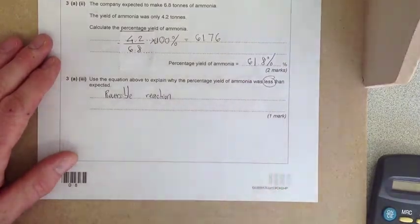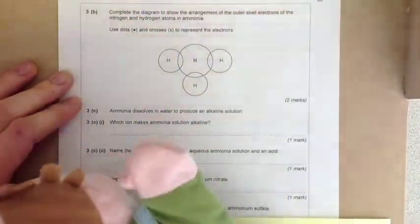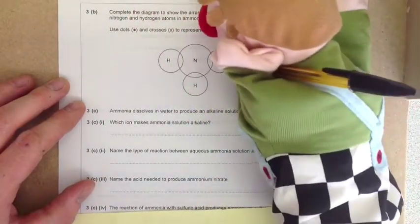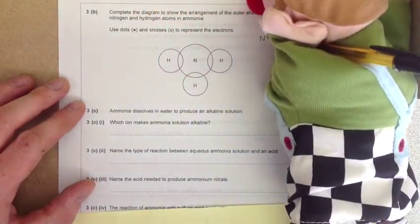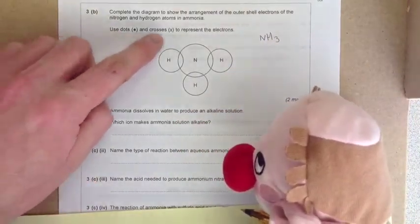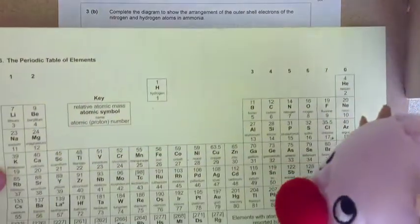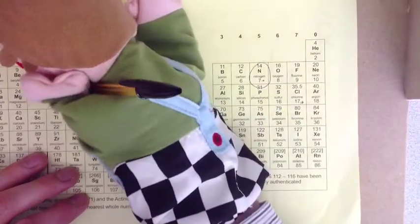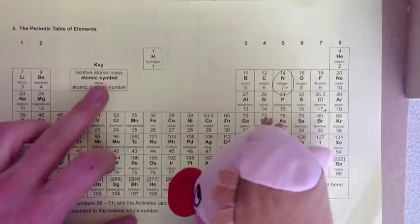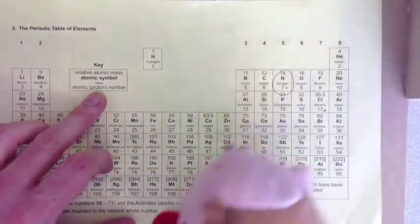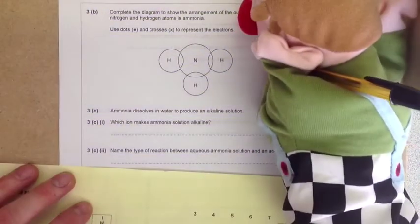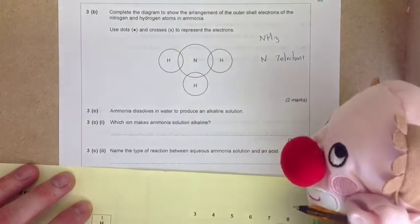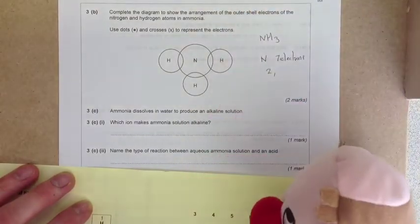The diagram shows the arrangement of shell electrons of nitrogen and hydrogen in ammonia - hydrogen, hydrogen, hydrogen, nitrogen because it is NH3. You've got to use dots and crosses to represent the electrons. Look at your periodic table - nitrogen has atomic number 7, so it has 7 electrons.